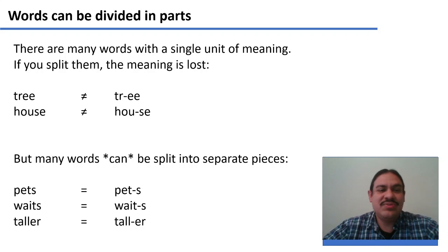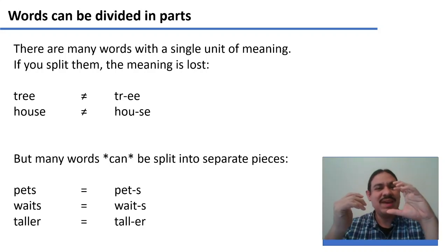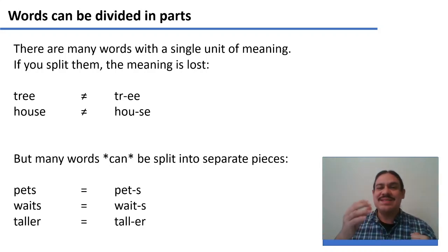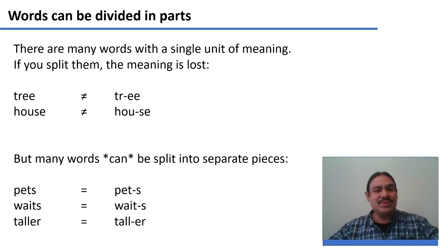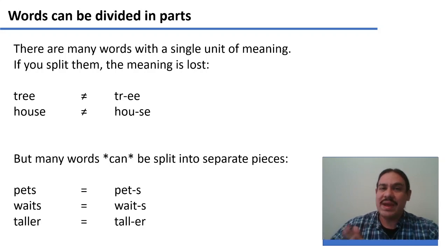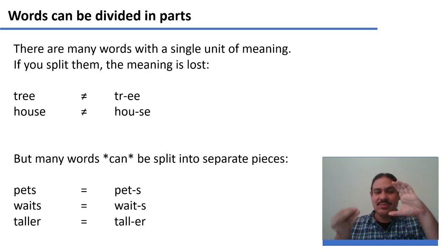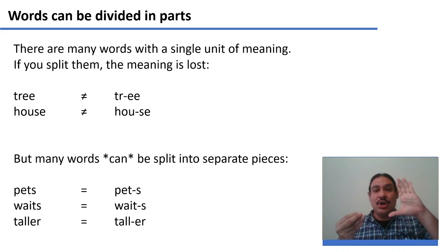But there are many words that can be split into different parts. For example, in the word 'pets,' there are two units: 'pet,' the animal that accompanies you, and 's,' which means there's more than one. There's a core meaning 'pet' and then 's,' a grammatical addition. In 'waits,' 'wait' is the main meaning and 's' means he/she/they are doing the action. In 'taller,' the core meaning is 'tall' and 'er' means someone is taller than someone else.